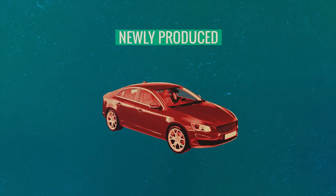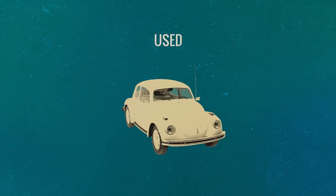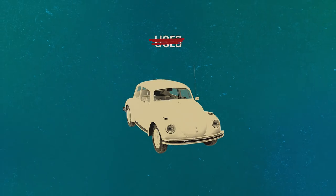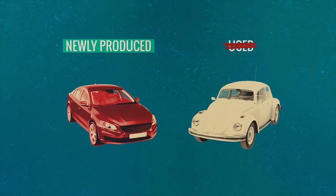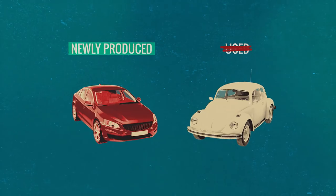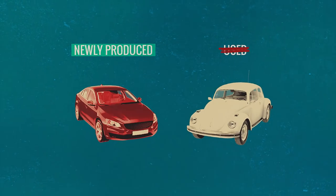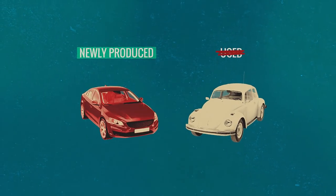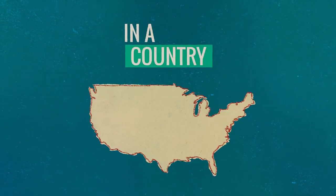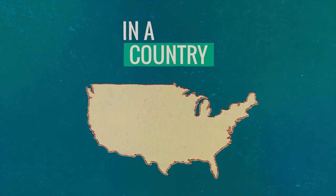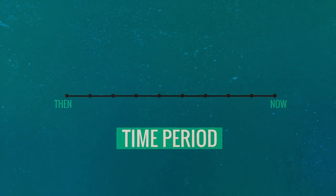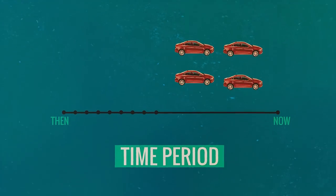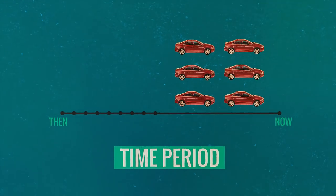GDP is newly produced. Newly produced means we don't count a used car that's purchased because that was produced in an earlier year. We only look at the new car produced because we're interested in what's produced in a particular period. And finally, it's in a country — the domestic refers to a country like the United States. This also refers to a time period, measuring what was actually produced during that period of time.